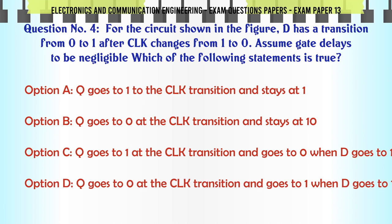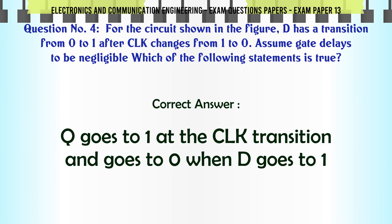For the circuit shown in the figure, D has a transition from 0 to 1 after CLK changes from 1 to 0. Assume gate delays to be negligible, which of the following statements is true? A: Q goes to 1 to the CLK transition and stays at 1, B: Q goes to 0 at the CLK transition and stays at 10, C: Q goes to 1 at the CLK transition and goes to 0 when D goes to 1, D: Q goes to 0 at the CLK transition and goes to 1 when D goes to 1. The correct answer is Q goes to 1 at the CLK transition and goes to 0 when D goes to 1.